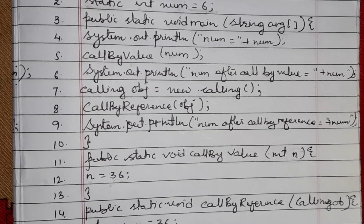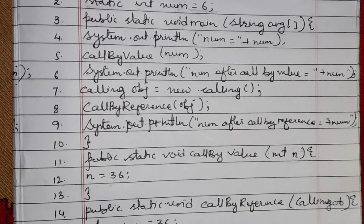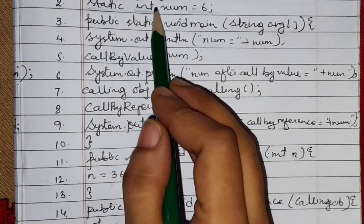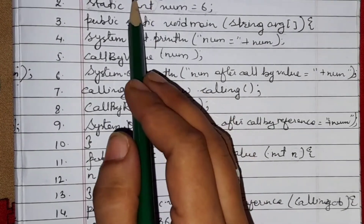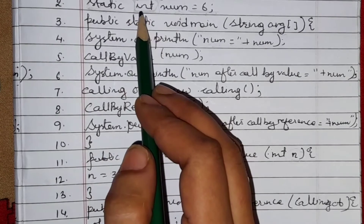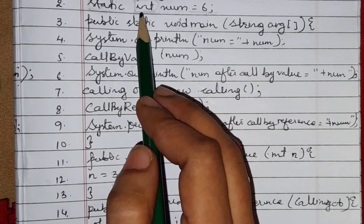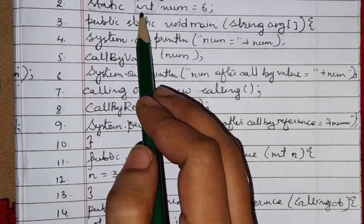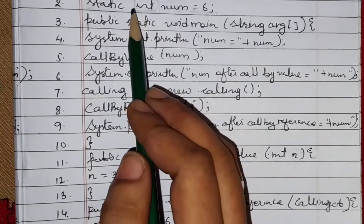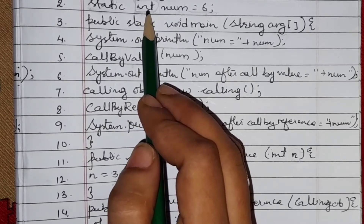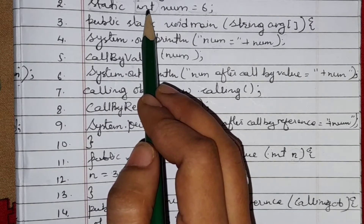Now, how do we know the difference between call by value and call by reference? In call by value, primitive data types are used. Wherever primitive data types appear in your program — like 'int', which is a primitive data type as learned in class 9 — there are a total of 8 primitive data types in Java.